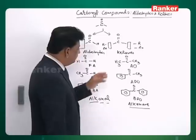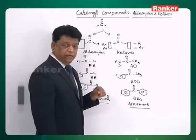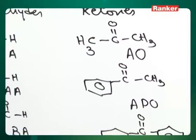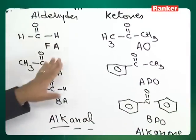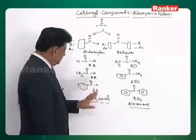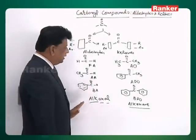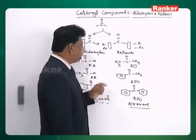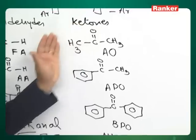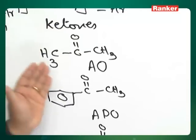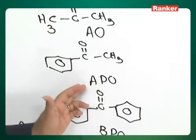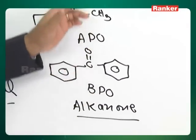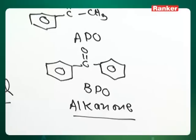Specifically in aldehydes and ketones, we also have functional nomenclature. The function 'form' gives formaldehyde; 'acet' with aldehyde gives acetaldehyde; 'benz' with aldehyde gives benzaldehyde. Similarly for ketones: 'acet' gives acetone, 'acet' with phenyl and one gives acetophenone, 'benz' with phenyl and one gives benzophenone. These are all called functional nomenclature.